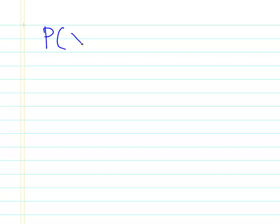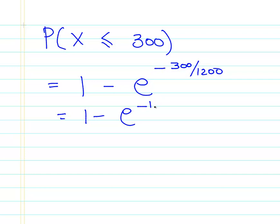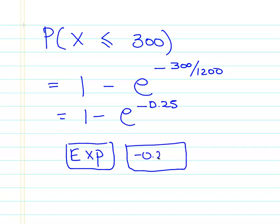Okay, so let's just get started on this. The first one is probability of x being less than 300, as in that the component fails within the first 300 hours. So that is 1 minus the exponential of minus 300 over 1200. That is 1 minus e to the minus 0.25. So on your calculator, what you should be pressing there is the exponential. That's one of the buttons on your calculator. And then just type in minus 0.25 in brackets or something like that.